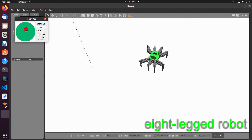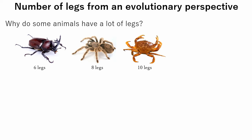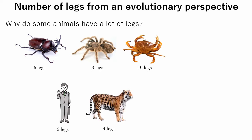Let's begin from observing animal world. Why do some animals have many legs? For example, in nature, bugs have six legs, spiders have eight legs, and crabs have ten legs including claws. We humans have only two legs and other mammals have four.